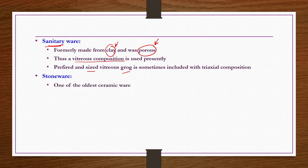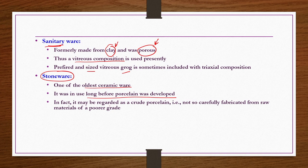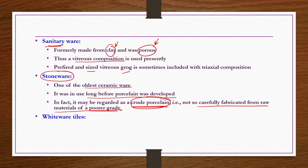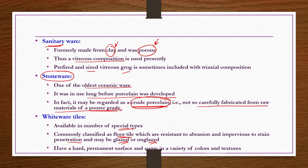Stoneware is one of the oldest ceramic wares, used long before porcelain was developed. It may be called an unprocessed or imperfect porcelain, since it is not carefully fabricated from high-grade raw materials — hence also known as crude porcelain. Whiteware tiles are available in several special types including floor tiles. These are classified as tiles resistant to abrasion and impervious to stain penetration, and may be glazed or unglazed. They have a hard permanent surface and come in a variety of colors and textures.